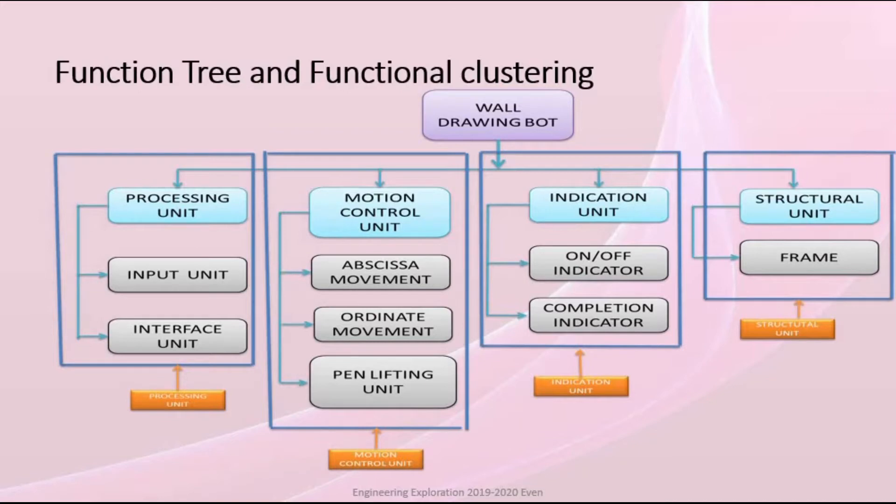In processing unit, we have divided the functions into two: input unit and interface unit. In motion control unit, there are three sub functions: abscissa movement, ordinate movement, and pen lifting movement. In indication unit, there are two sub functions: on and off indicator and completion indicator. And in structural unit, there is one more function, that is frame.